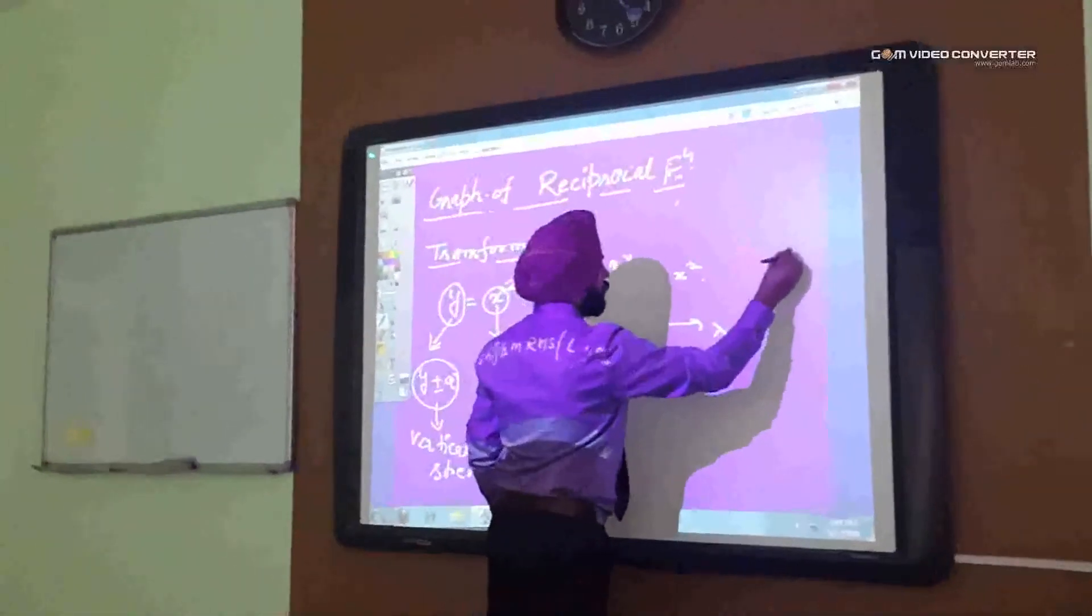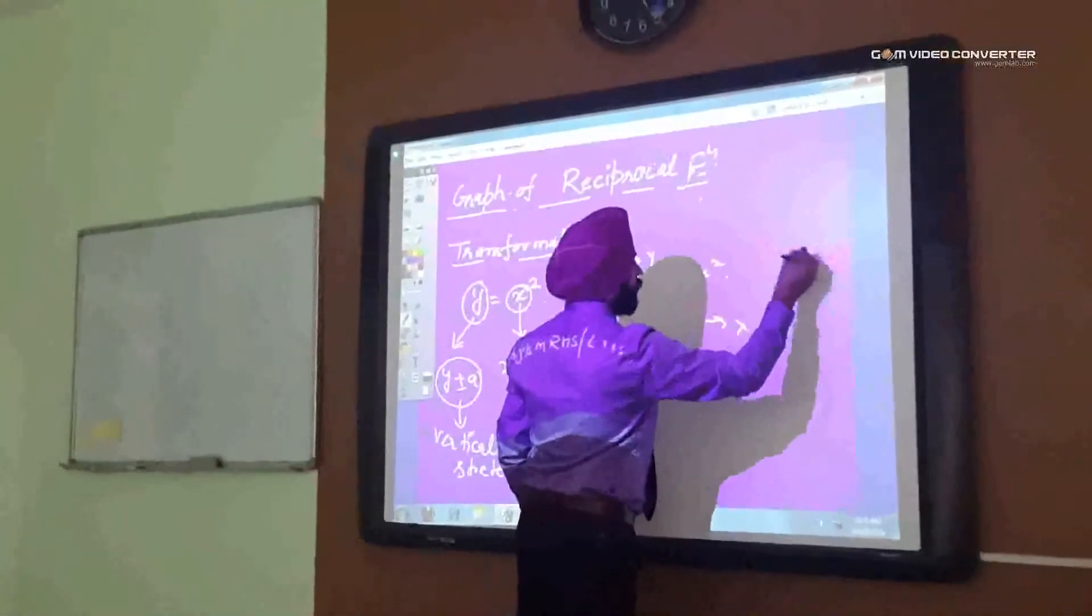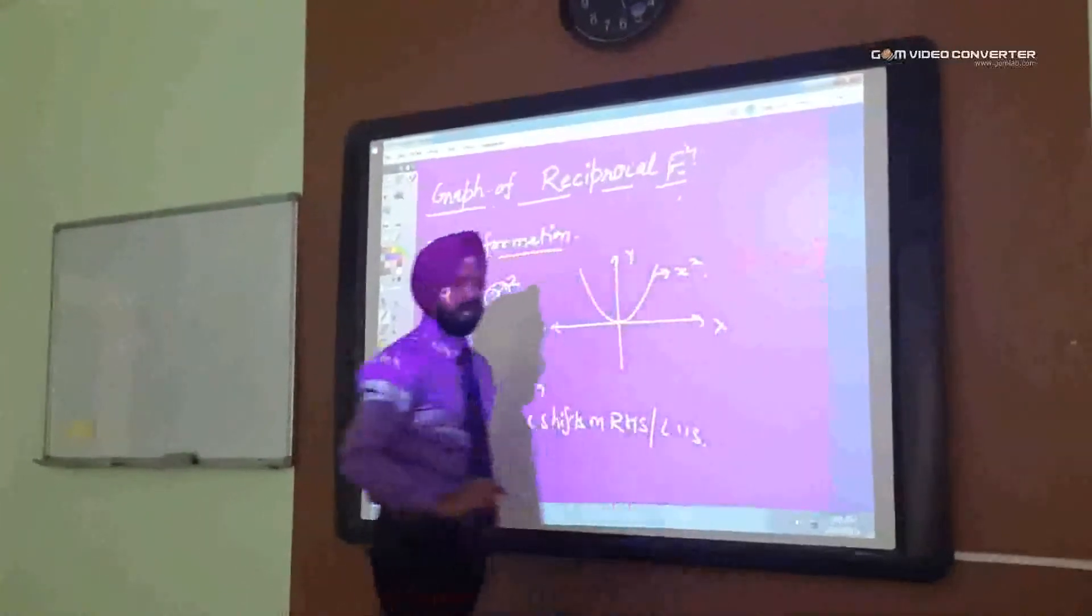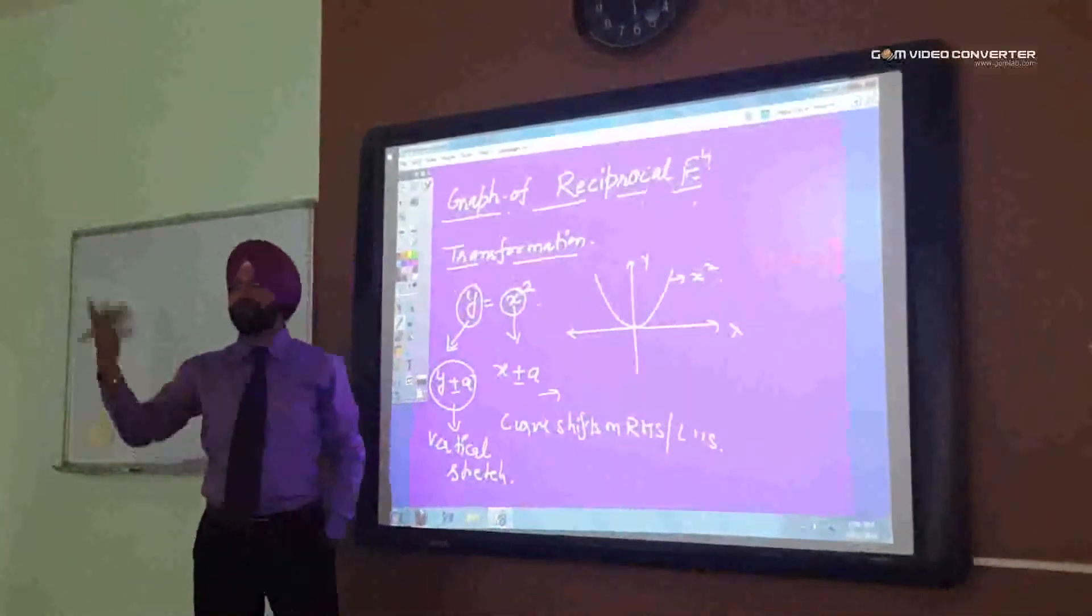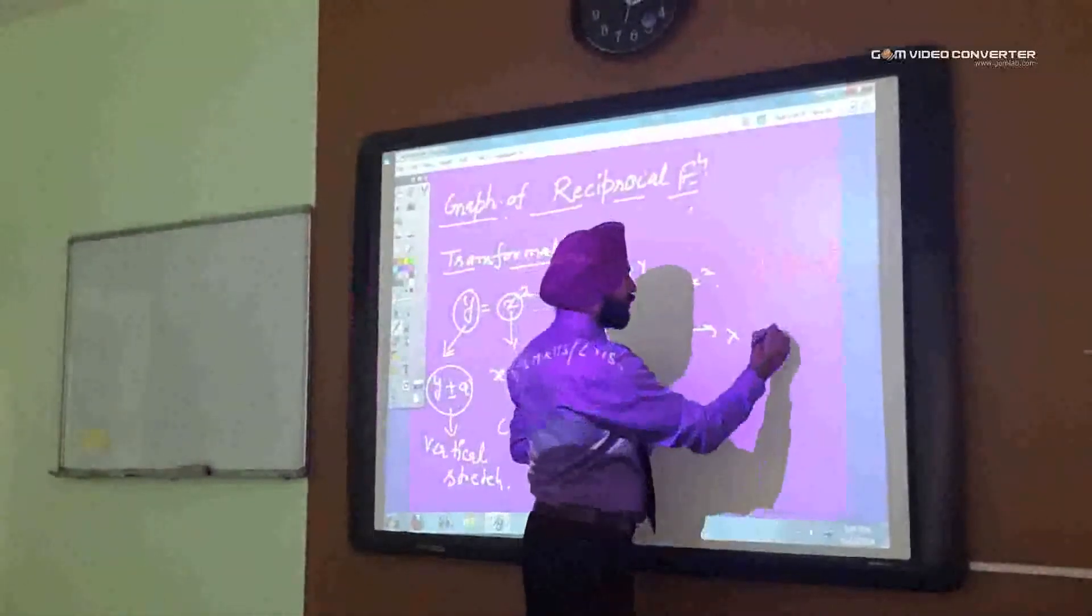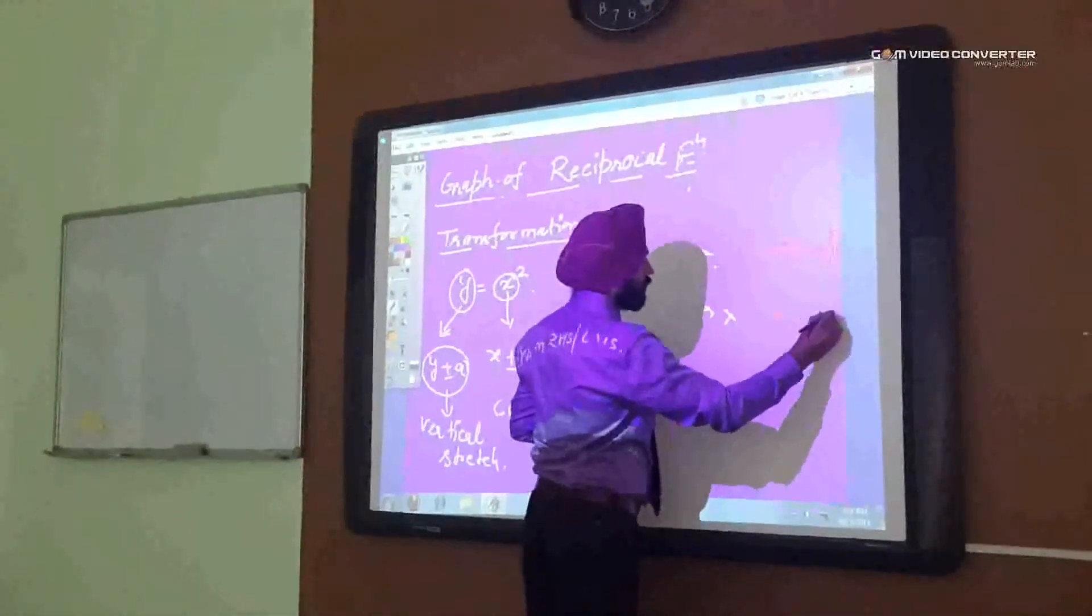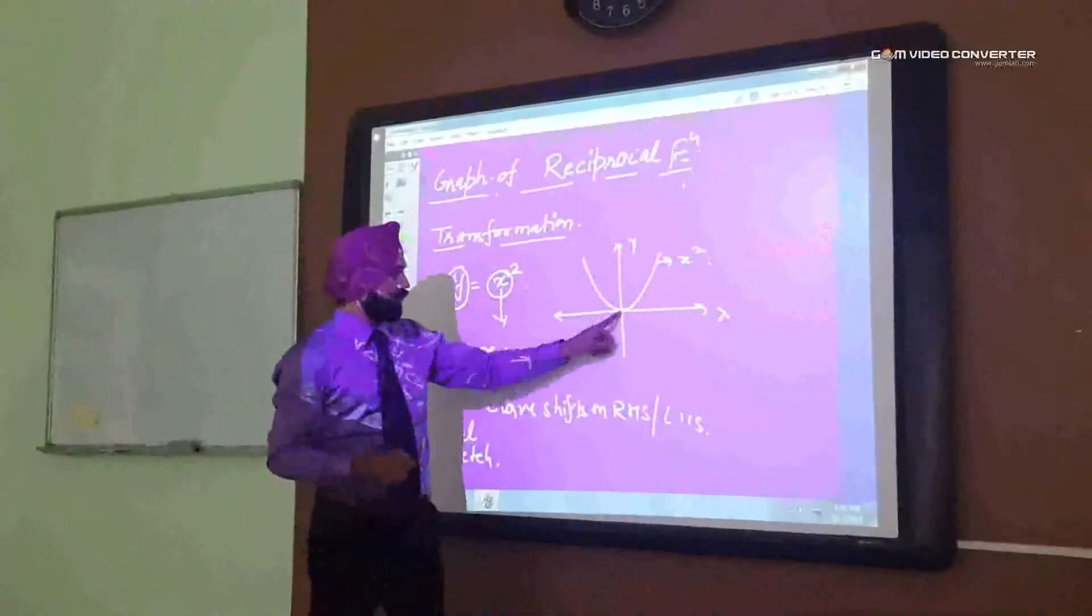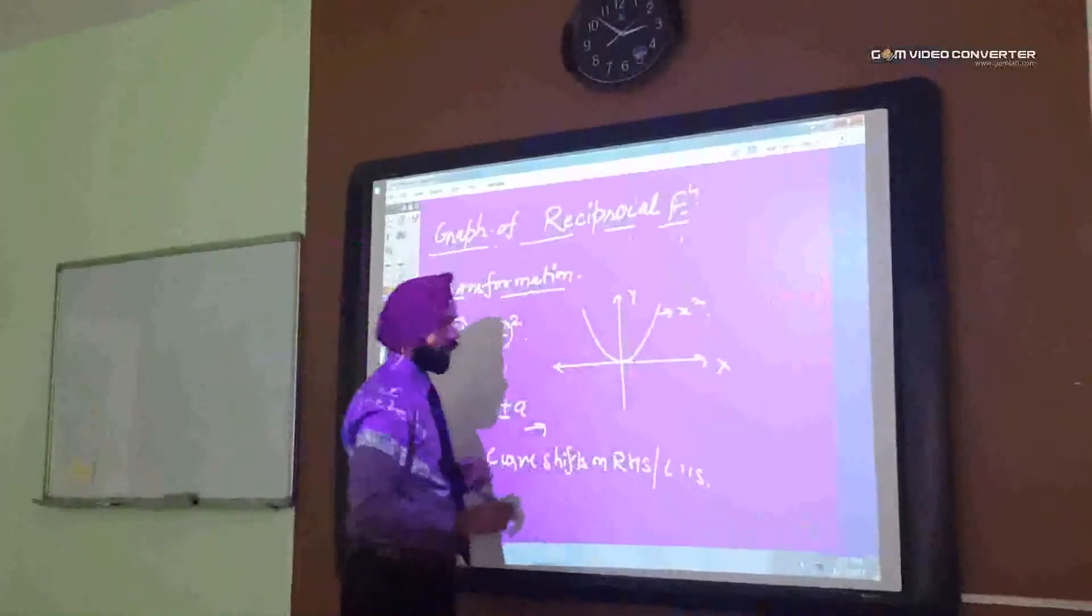y is equals to x minus 2 whole squared. Now, what is the effect of x minus 2 whole squared? It means x minus 2, to get origin, x minus 2 must be 0, because here x, so it is 0.